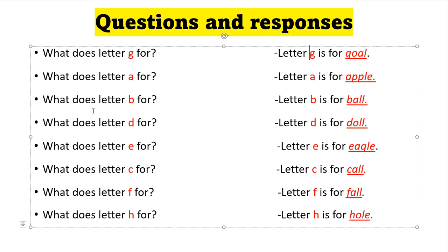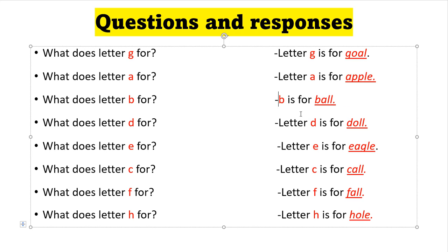What does letter B stand for? Letter B is for ball. If you play soccer, volleyball, or basketball, you need a ball. It's so hard to say 'letter B is for ball,' so you can say 'B is for ball.'